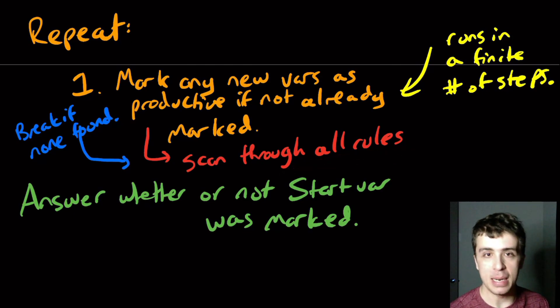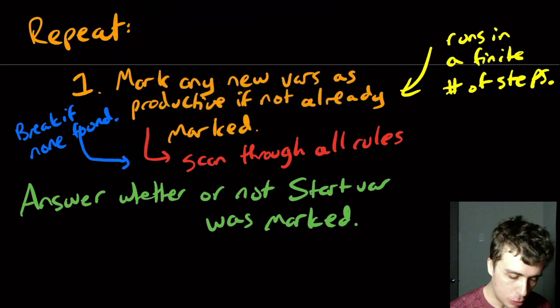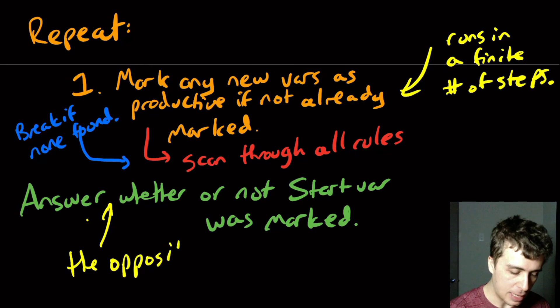If it was an infinite number of rules, we would not be able to do this. But since it's a finite number of rules, we're able to do that. And then obviously, this stuff runs in a finite amount too. And actually, I should note here,